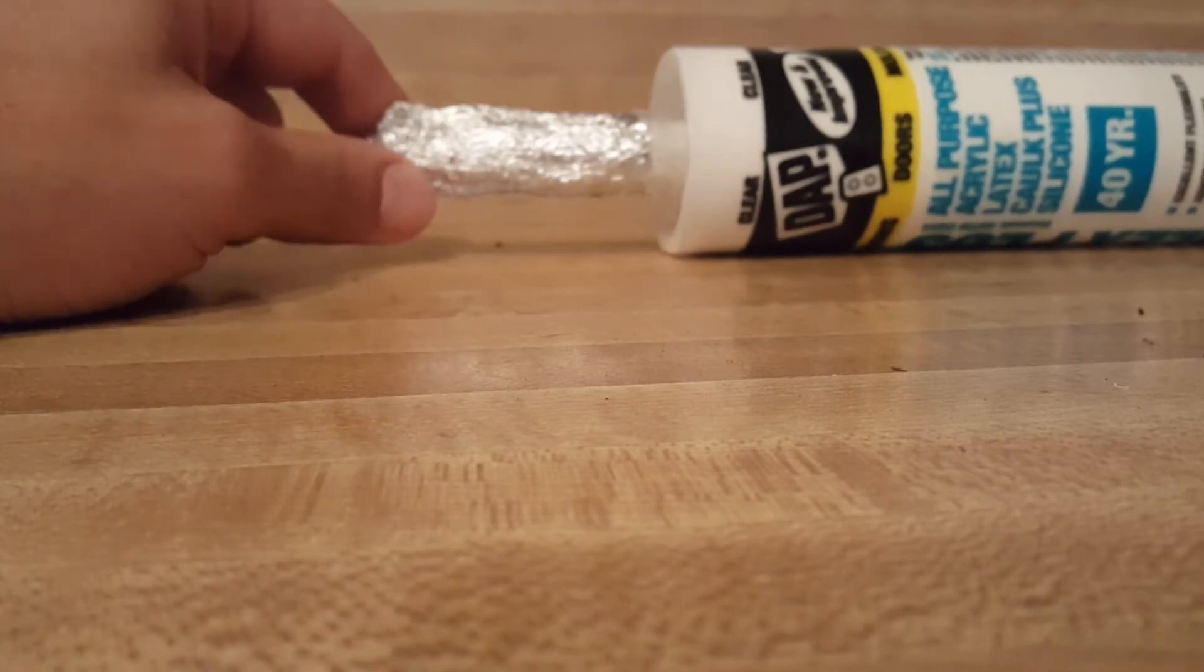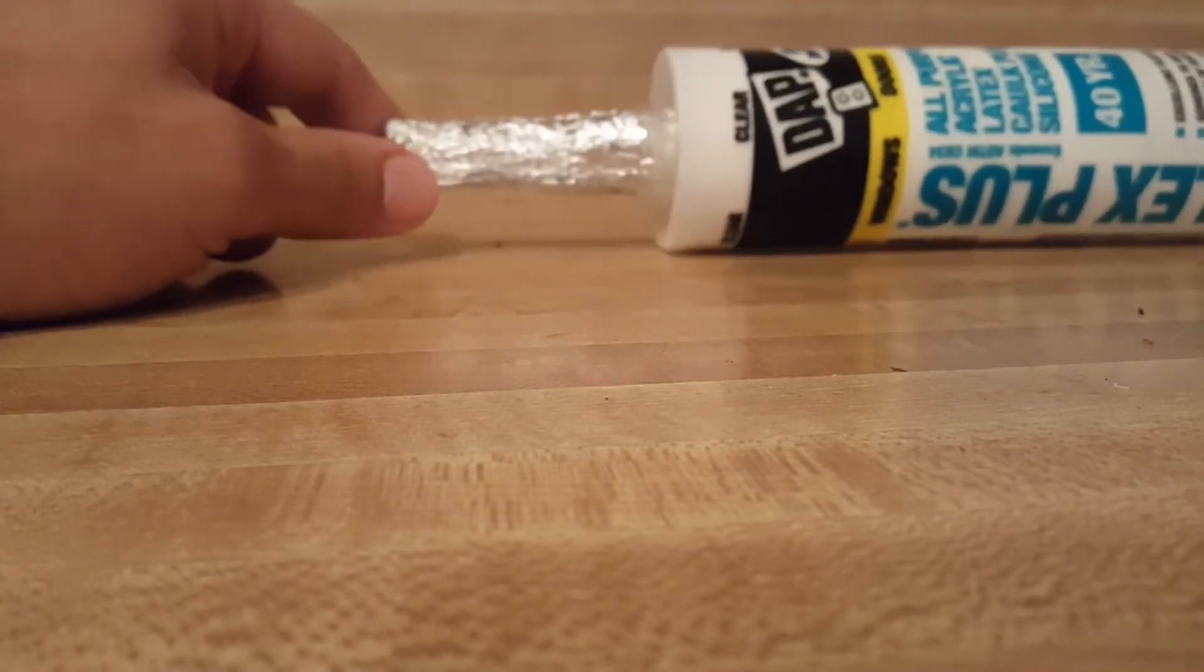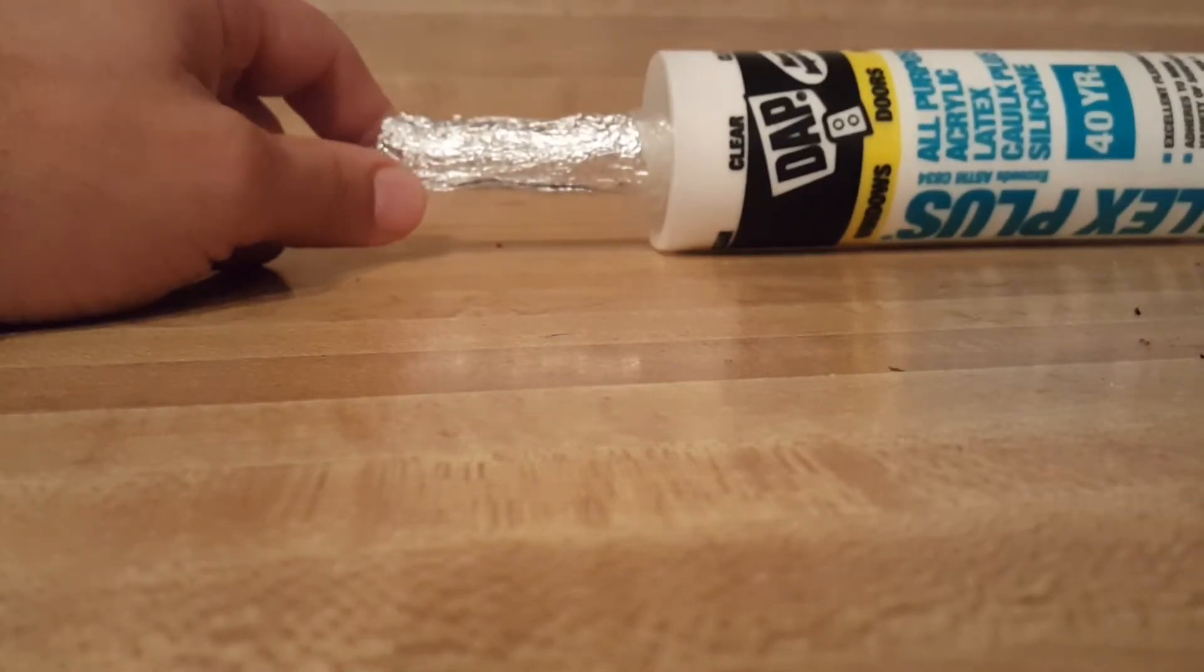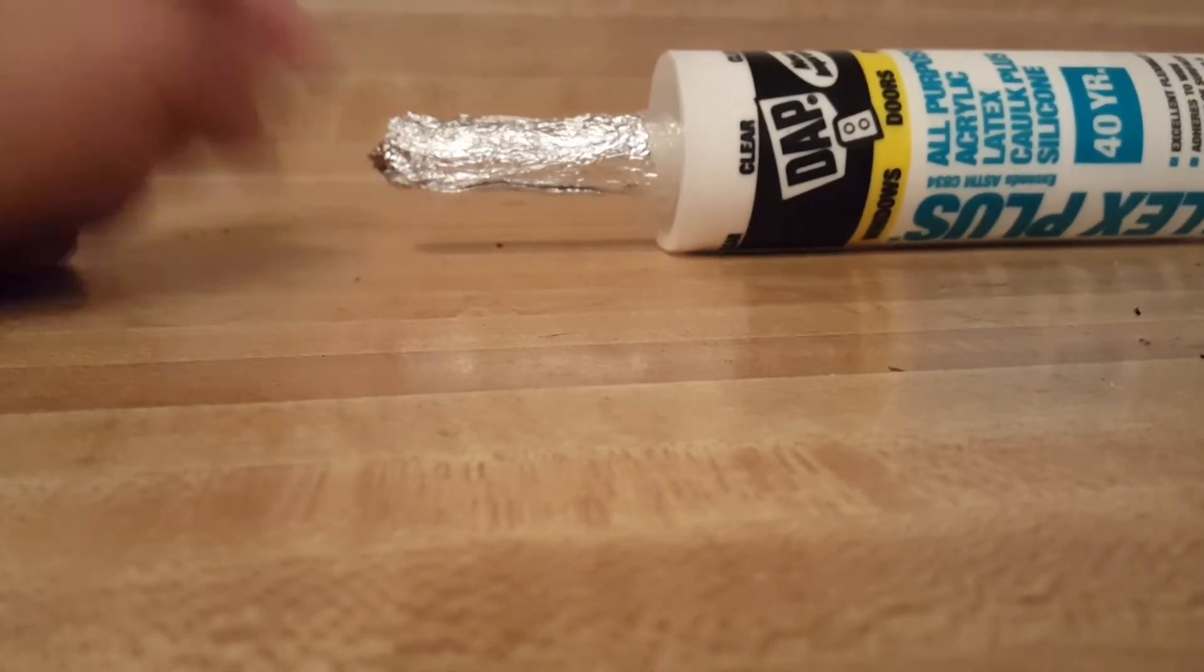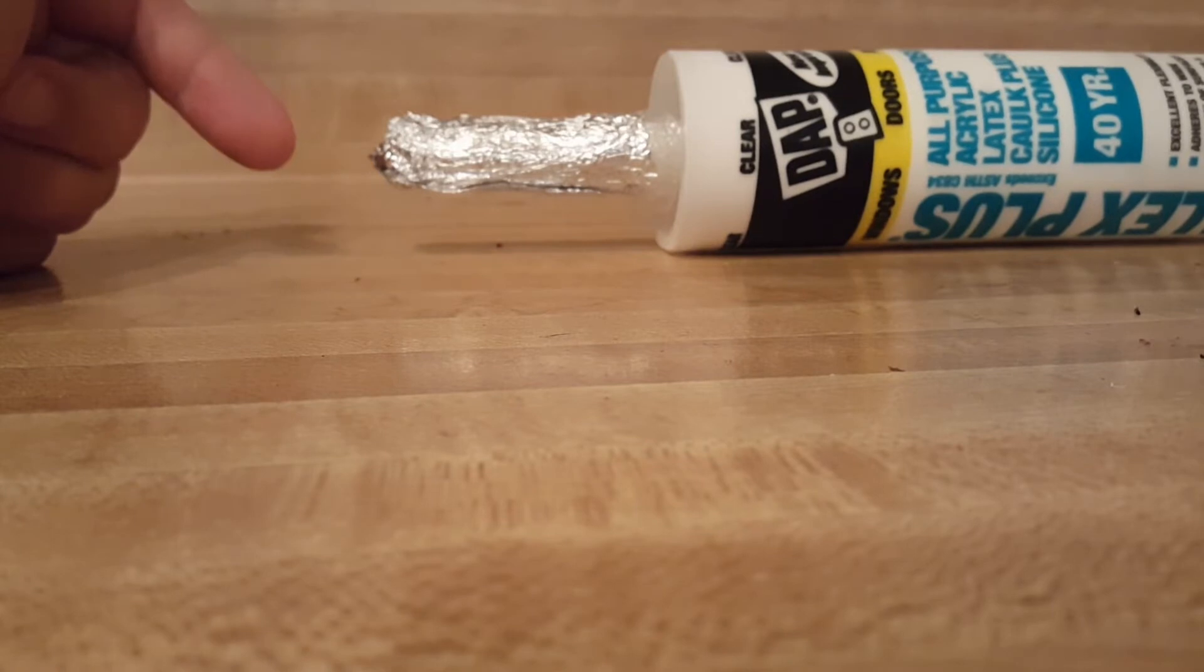This tube of caulk here is probably two to three years old since I used it last, and I've always struggled reusing caulk for a second time. It always dries up. I've tried just about everything on the ends, and every time I go to use it, it's hard. I can't get the dried up crusty stuff out of the end to work.